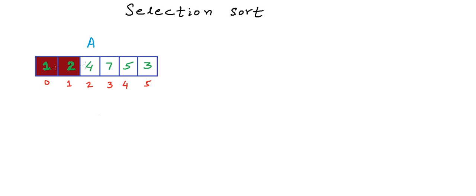With each pass, we add one more cell to the sorted part. And eventually, the whole array will be sorted. The minimum in the range index 2 to 5 is 3. So, 3 needs to go at position 2. So, it needs to be swapped with 4.